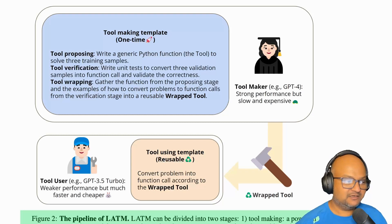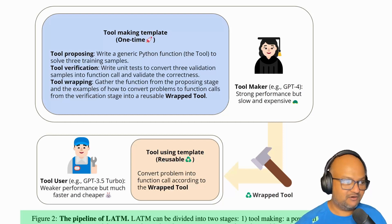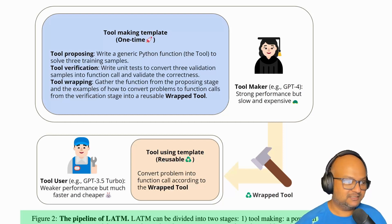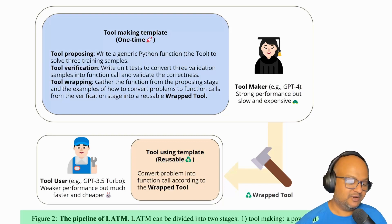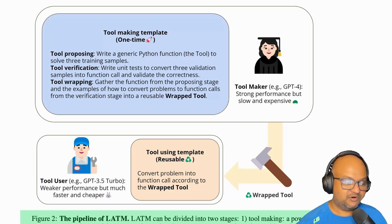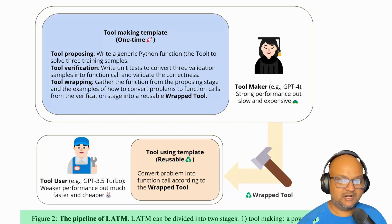Once you have that code, you can then further use the LLM to write unit tests for that code and verify that it works as you expect. The final stage is to wrap it up so that when you get further tasks in that category, you can write a prompt that will map the solution of that task to calling this new tool rather than asking the LLM to solve it directly.